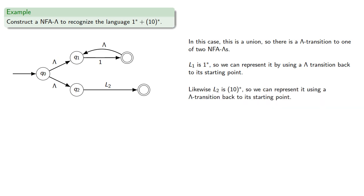Likewise, our second language is one zero star, so we can represent it again by getting to our accepting state, and then using a lambda transition back to the starting point.